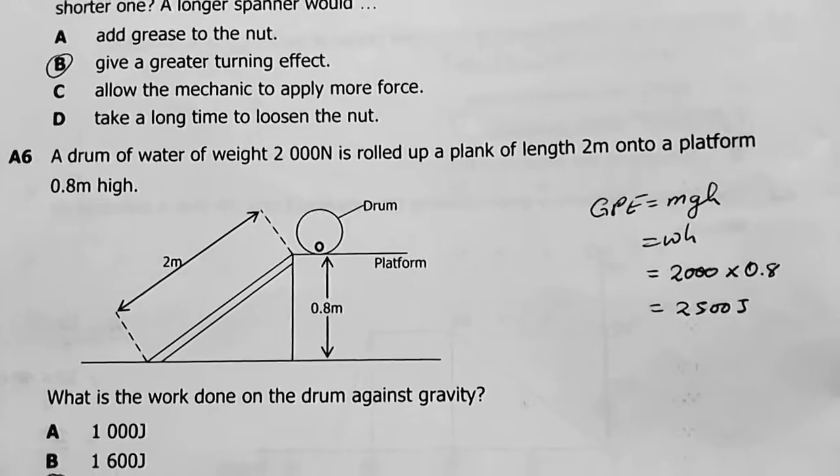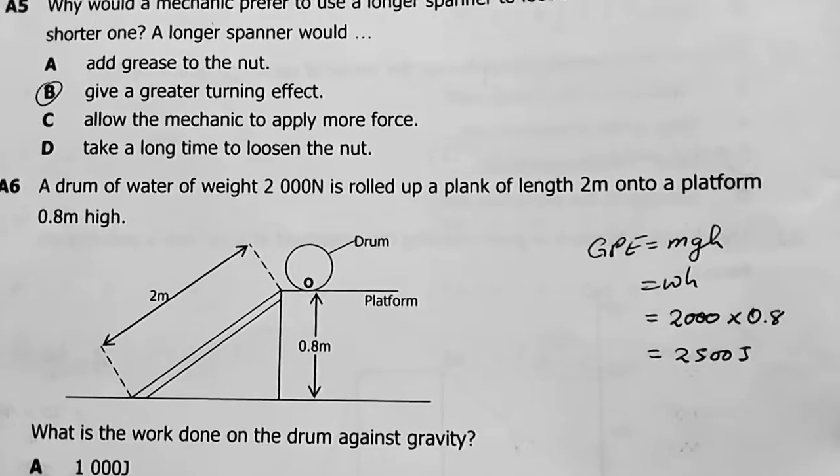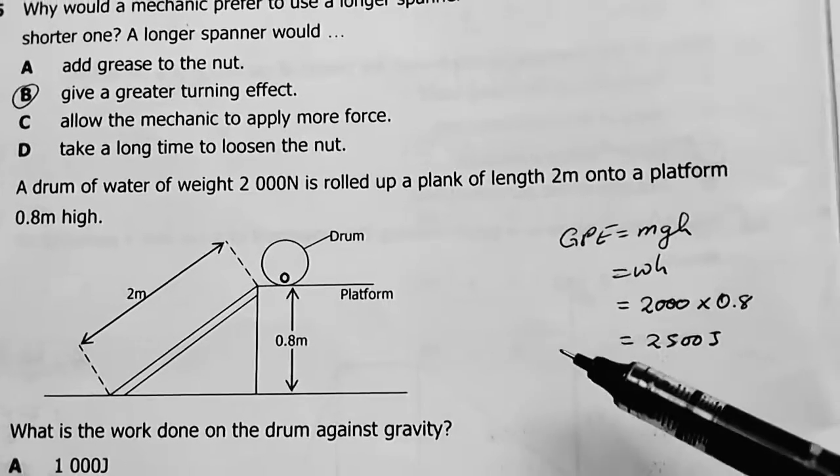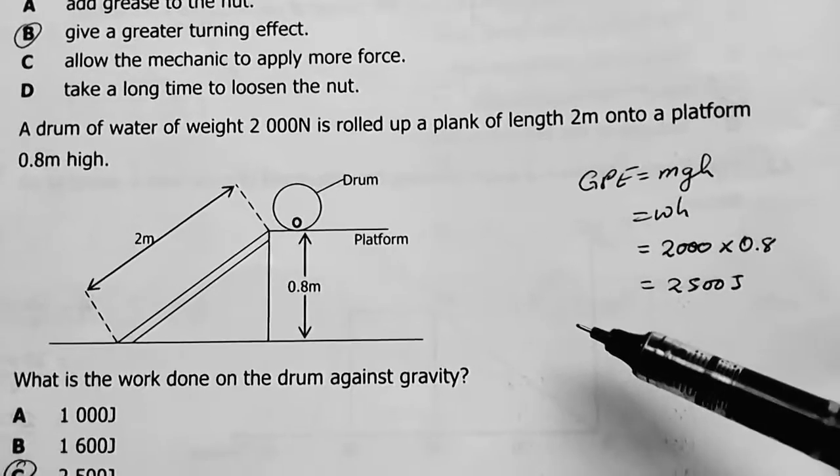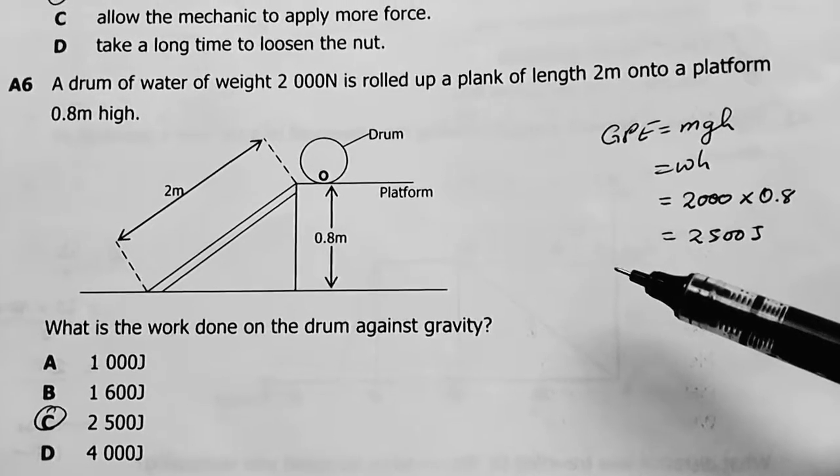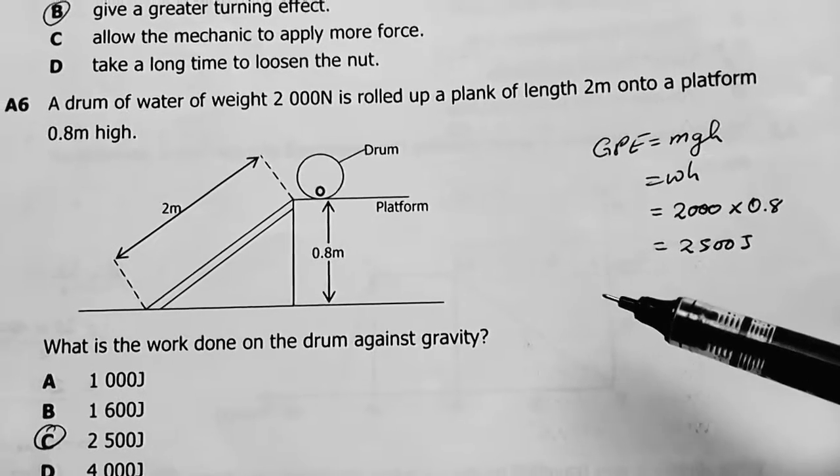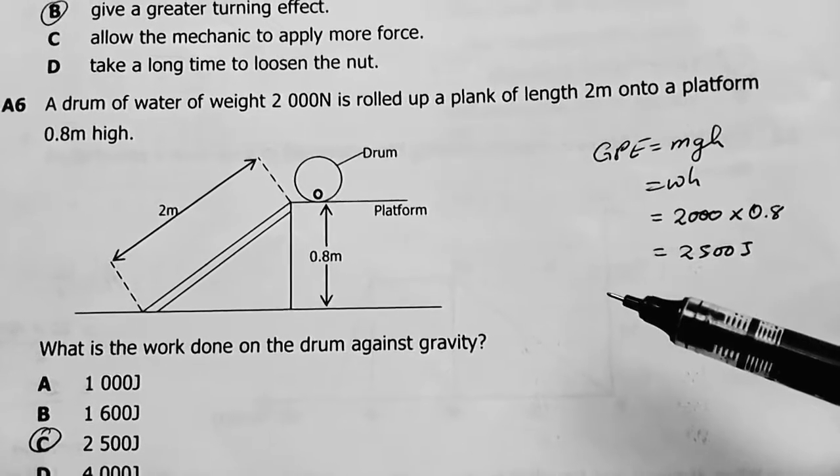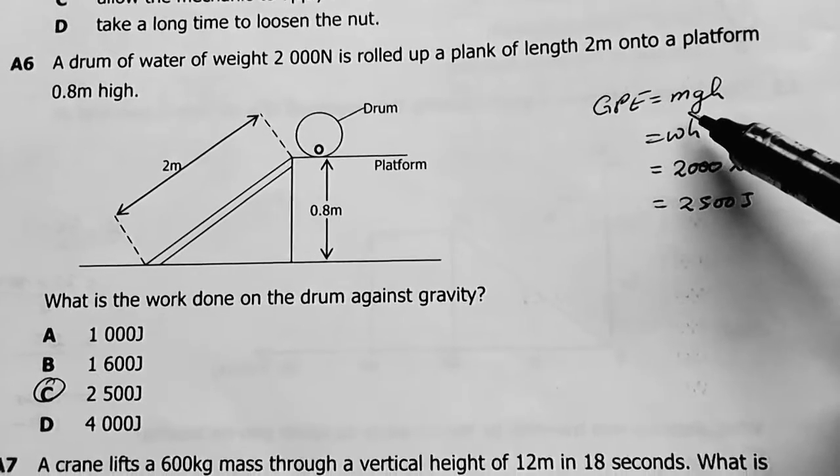Number 6: A drum of water of weight 2000 newtons is rolled up a plank of length 2 meters onto a platform 0.8 meters high. What is the work done on the drum against gravity?